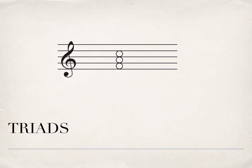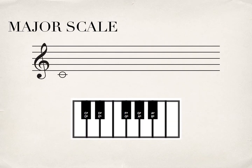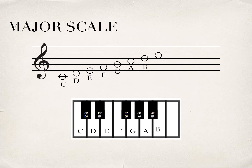Today we're going to be talking about triads. We'll start with a major scale. All we have to do is have our scale. You know we're in the key of C since there are no sharps or flats, so C, D, E, F, G, A, B, C.